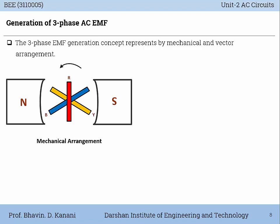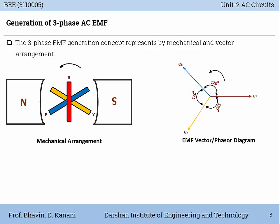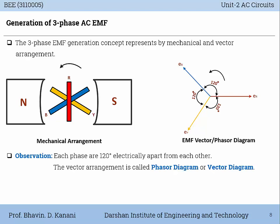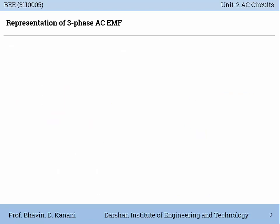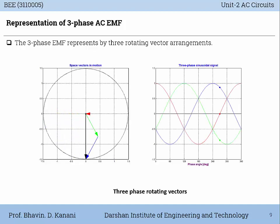The three-phase EMF generation concept is represented by mechanical and vector arrangements. This diagram shows the mechanical arrangement of R, Y, B windings in the generator. The right-hand side figure represents the vector or phasor diagram — it shows electromagnetic waves where each phase is 120 degrees electrical apart from each other. This vector arrangement is called a phasor diagram or vector diagram. The order in which the voltages in three phases reach their maximum positive value is called the phase sequence, which may be R-Y-B or R-B-Y.